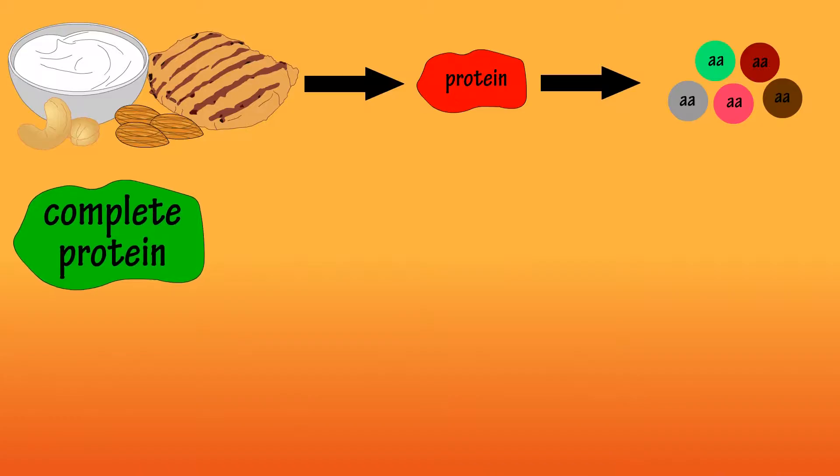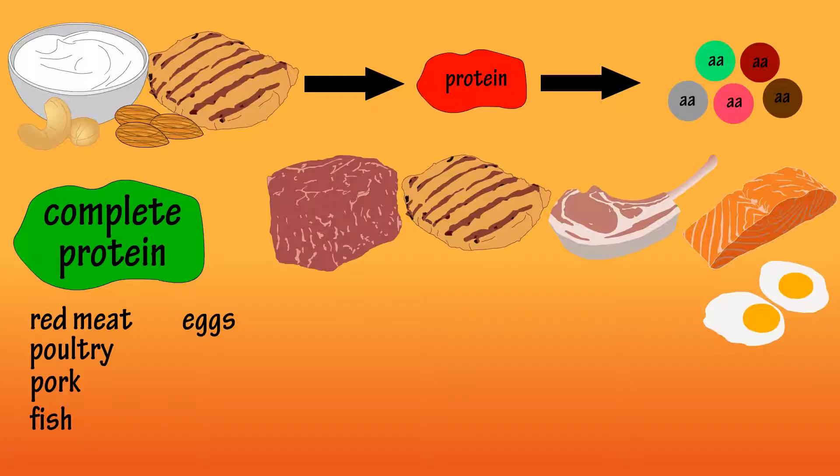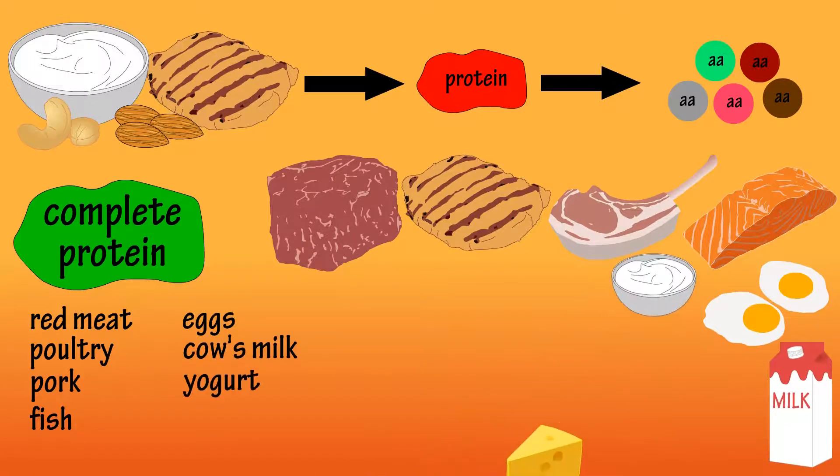Complete protein foods include animal foods such as red meat, poultry, pork and fish, eggs and dairy products such as cow's milk, yogurt and cheese.